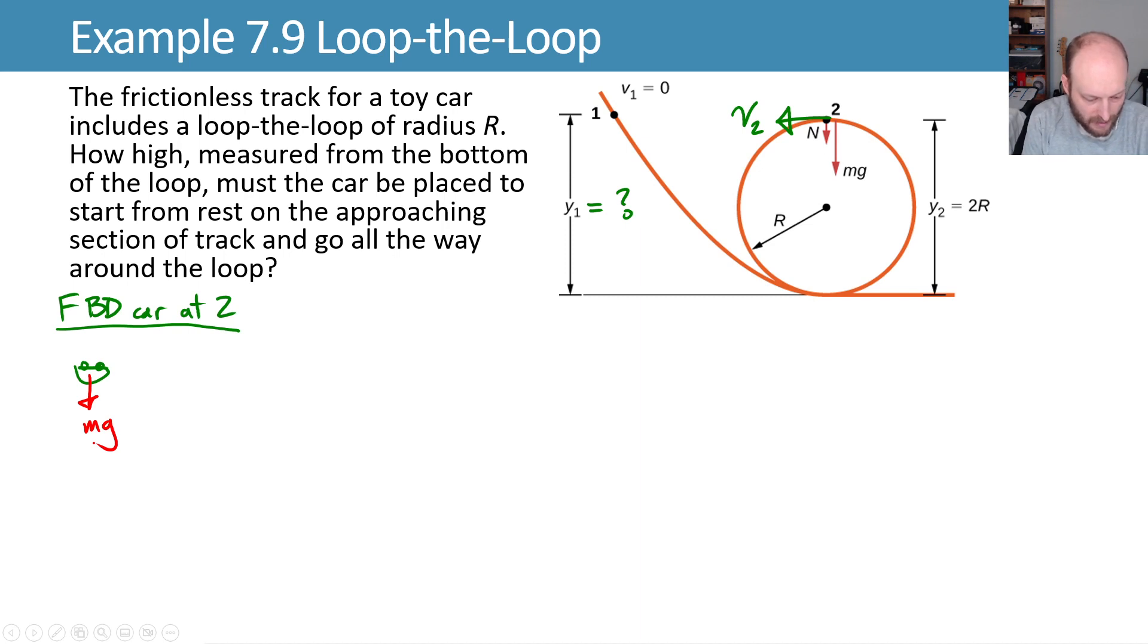It will have some velocity v2 and it might have some normal force, but the normal force can only push. It's not pulling, it's not strapped in somehow, there are no rails here. So this normal force can be greater than or equal to zero. In the limit where it's just barely staying on the track, it's not exerting any normal force on it.